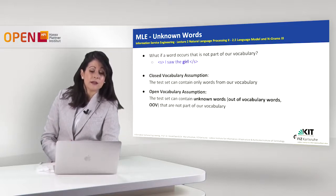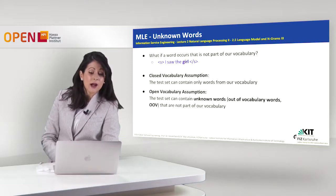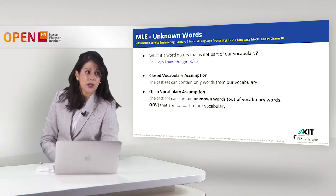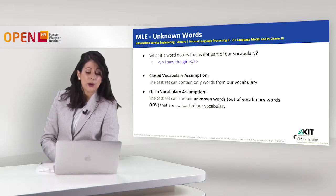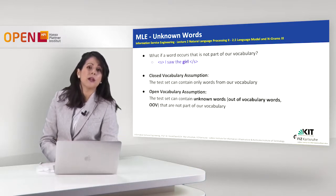But what would happen if there is a sentence we have to evaluate which contains an unknown word — a word not in our vocabulary? For example, the sentence 'I saw the girl': the word 'girl' doesn't exist in our vocabulary. Here we have two assumptions we can follow. The first is called the closed vocabulary assumption, where the test set can only contain words from our vocabulary. But there is also the open vocabulary assumption, where the test set can contain unknown words — abbreviated as OOV, meaning out-of-vocabulary words.